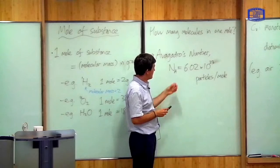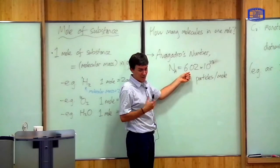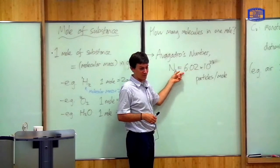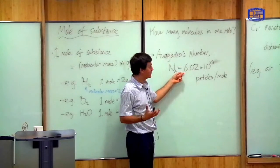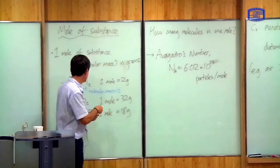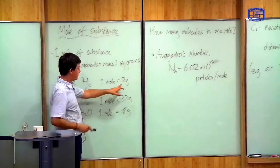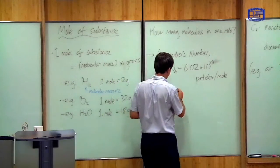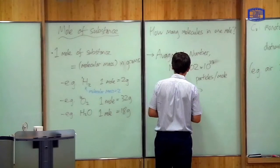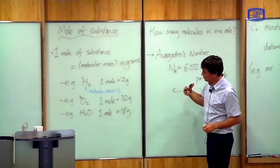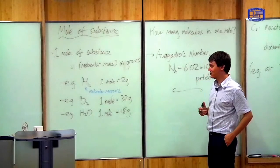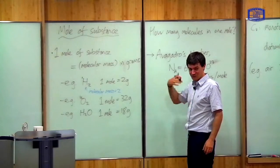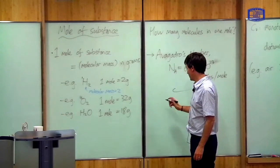Avogadro's number itself is very difficult to measure, so next time one of the things we're going to do is explain how experimentally you can calculate this — for example, how many hydrogen molecules are in two grams of hydrogen. This allows you to change the equations of state for the ideal gas from talking about numbers of particles to talking about numbers of moles.